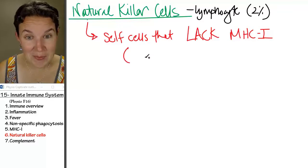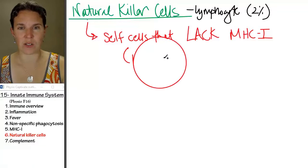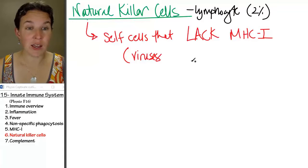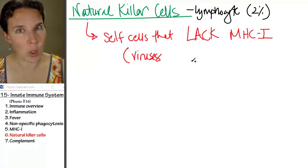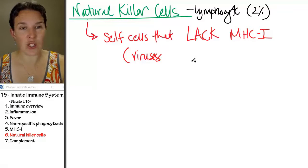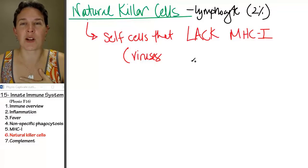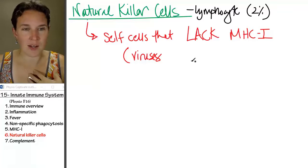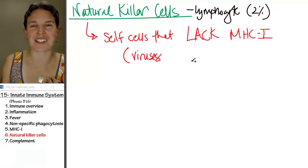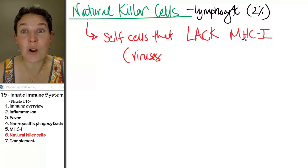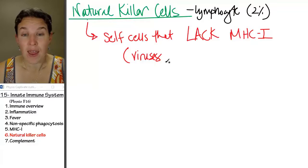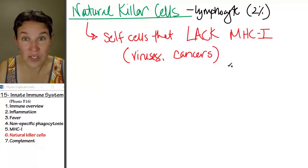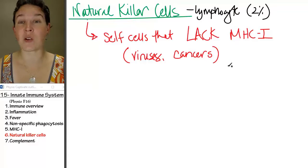Sometimes certain pathogens, like viruses — some viruses are like, I am going to disable your Facebook account so that you cannot post information about my presence, because the police might come and arrest me if you post information about my presence. So they make your MHC1 go away.